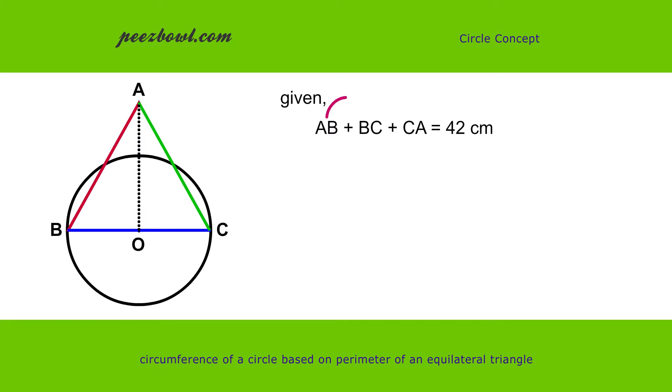so we can replace AB and CA with BC. We can write BC plus BC plus BC equals 42 cm. So 3 multiplied by BC equals 42 cm.